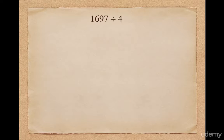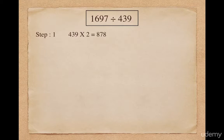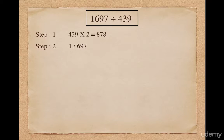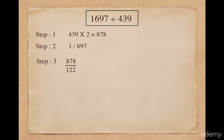Let's move to our next example. Suppose I want to divide 1697 by 439. 439 does not meet any criteria where we can apply Nikhilam formula or Parvartiya method. So as a solution, I multiply 439 with 2 and it gives me 878. 878 is definitely closer and smaller than a power of 10, so we can apply Nikhilam formula here. As a next step I split 1697 into 1 and 697. I apply Nikhilam formula on 878 and get the complement 122.